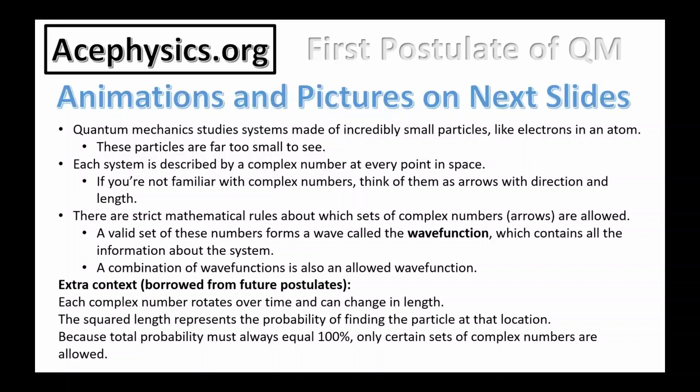Each complex number rotates over time and can change in length. The squared length represents the probability of finding the particle at that location. And again, only certain sets of complex numbers are allowed.